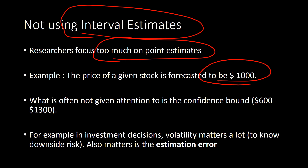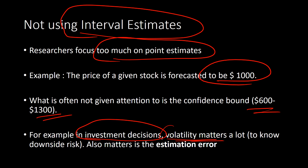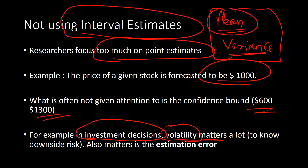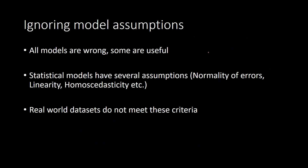But what is not often given attention is that the confidence bound may be quite wide — for a given stock, say it lies between $600 and $1,300. That means the stock price could go as low as $600 and the investor might lose money, but they probably haven't been informed about these confidence levels. In investment decisions, what matters a lot is volatility — not just the forecasted mean but also the variance — and people who report only the mean are essentially misleading audiences.